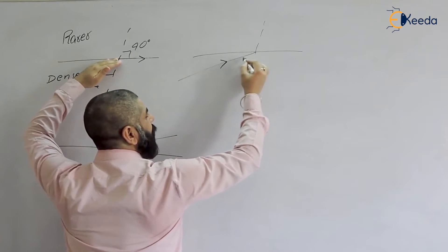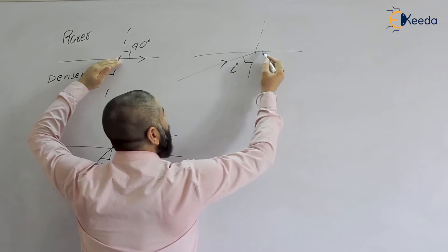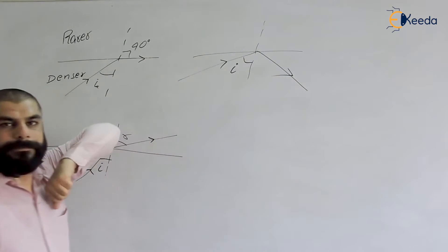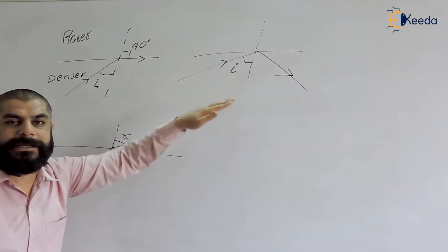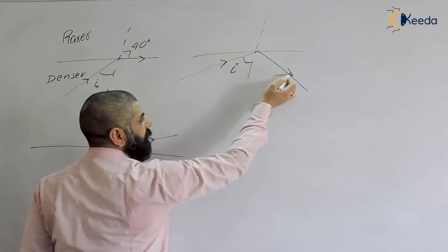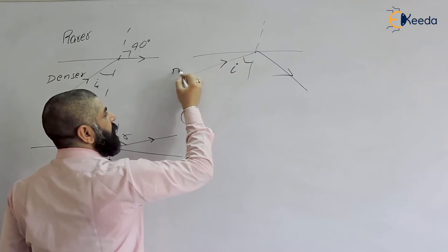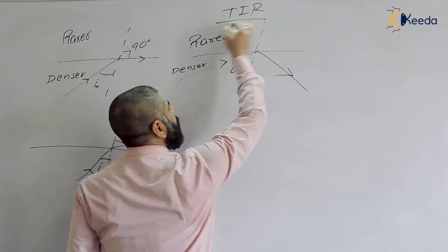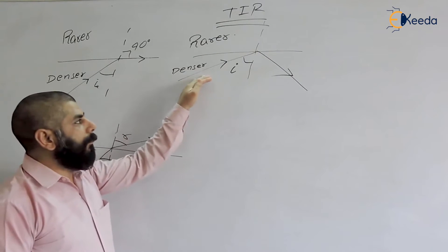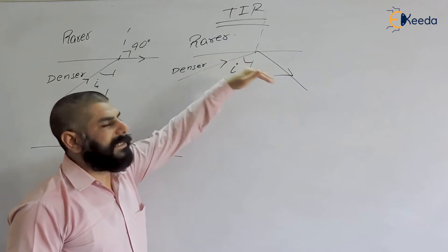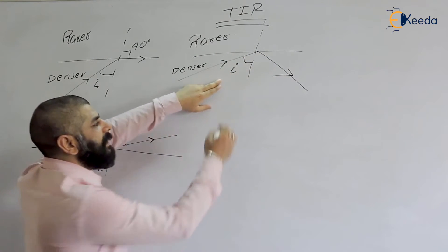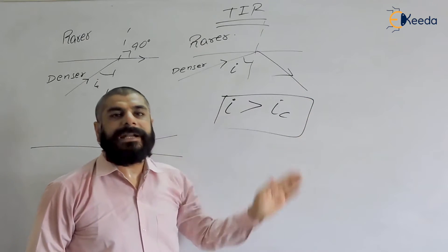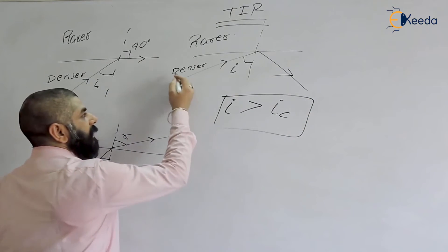If the angle of incidence is greater than the critical angle, the light will move further away from the normal — meaning it will be reflected back into the same medium. This is not ordinary reflection; this is total internal reflection. The light is reflected back into the denser medium rather than passing into the rarer medium.